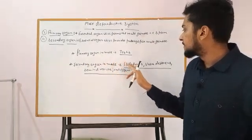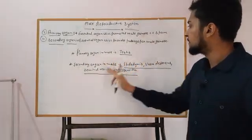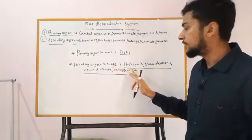Secondary organ in male is epididymis, vas deferens, seminal vesicle and vasa efferentia.